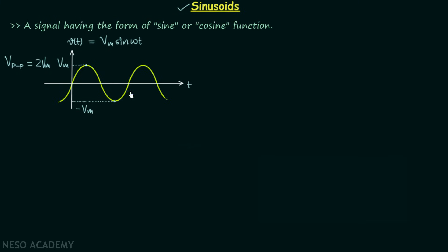When you focus on the signal waveform you will find there is a particular structure repeated an infinite number of times from minus infinity to plus infinity, and therefore we can say that the signal is a periodic signal. The minimum time after which the signal repeats we call the fundamental time period, represented by uppercase T. This will be the fundamental time period T and this will be the half of the fundamental time period.